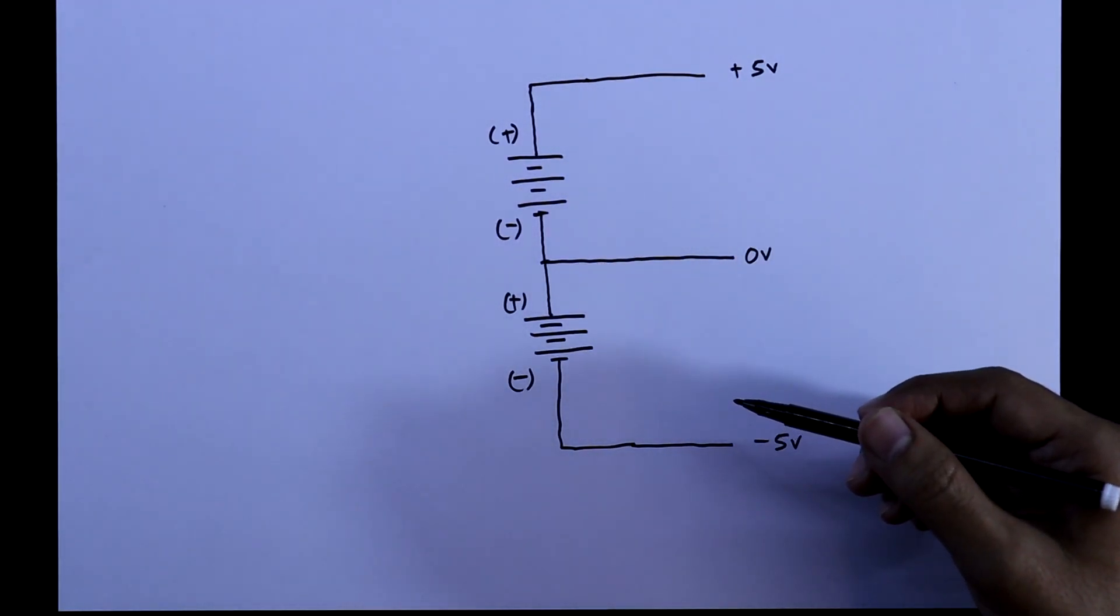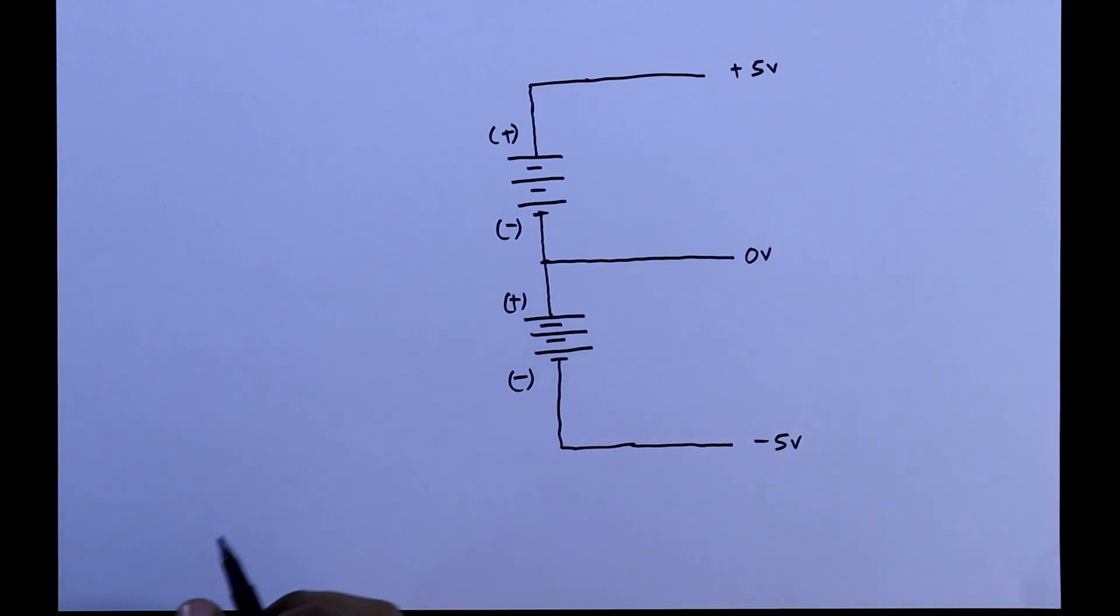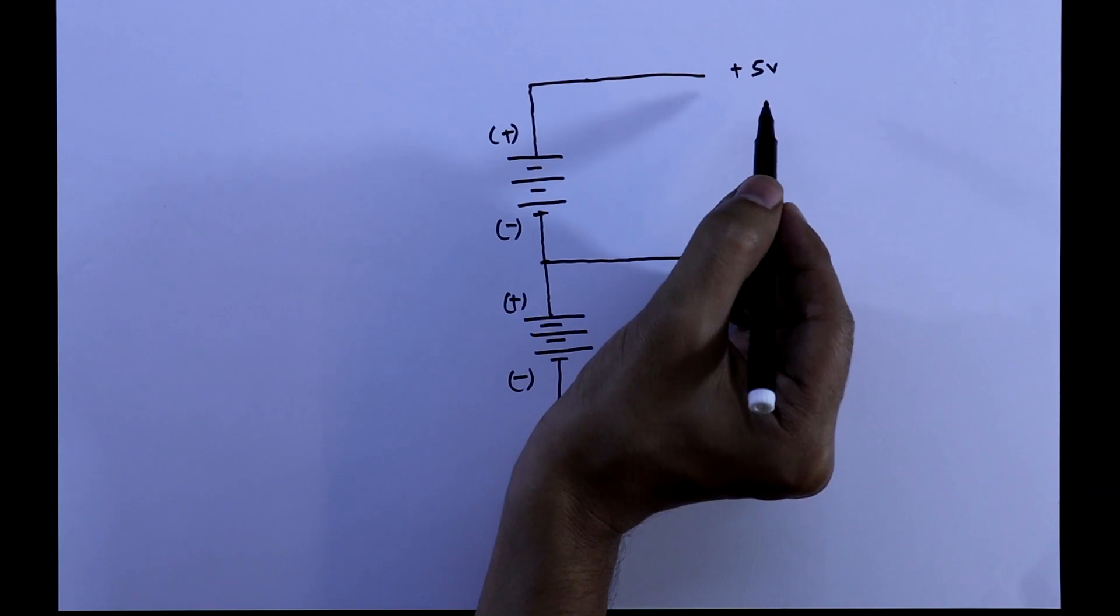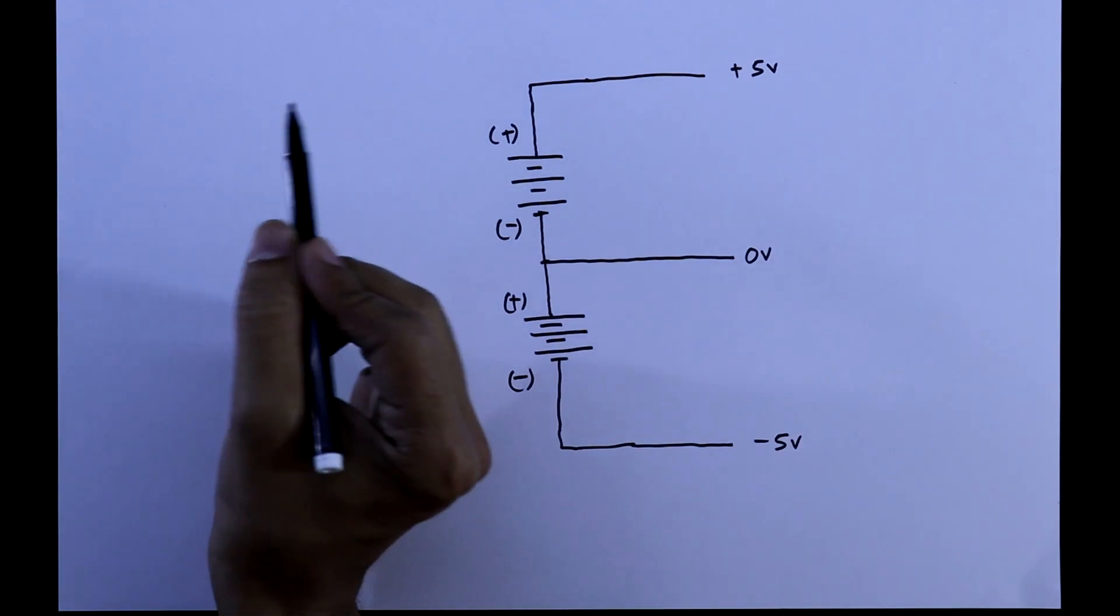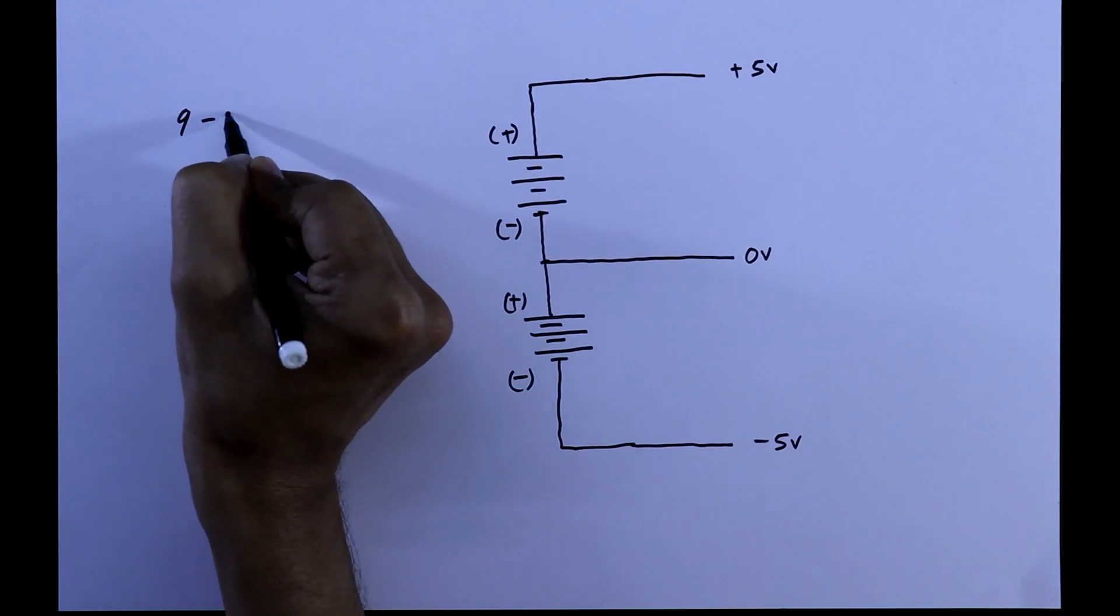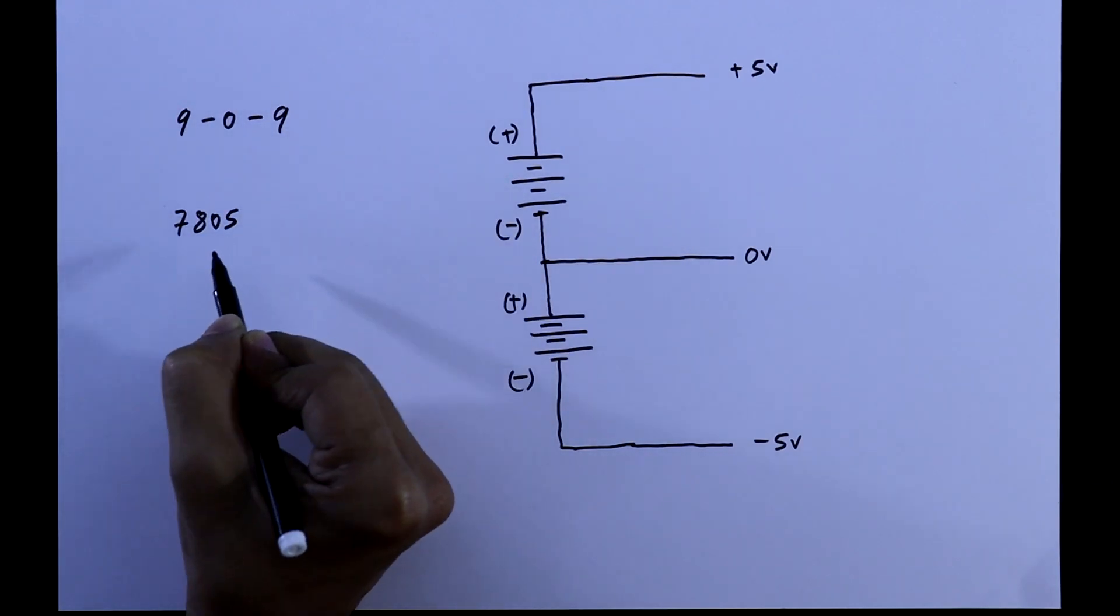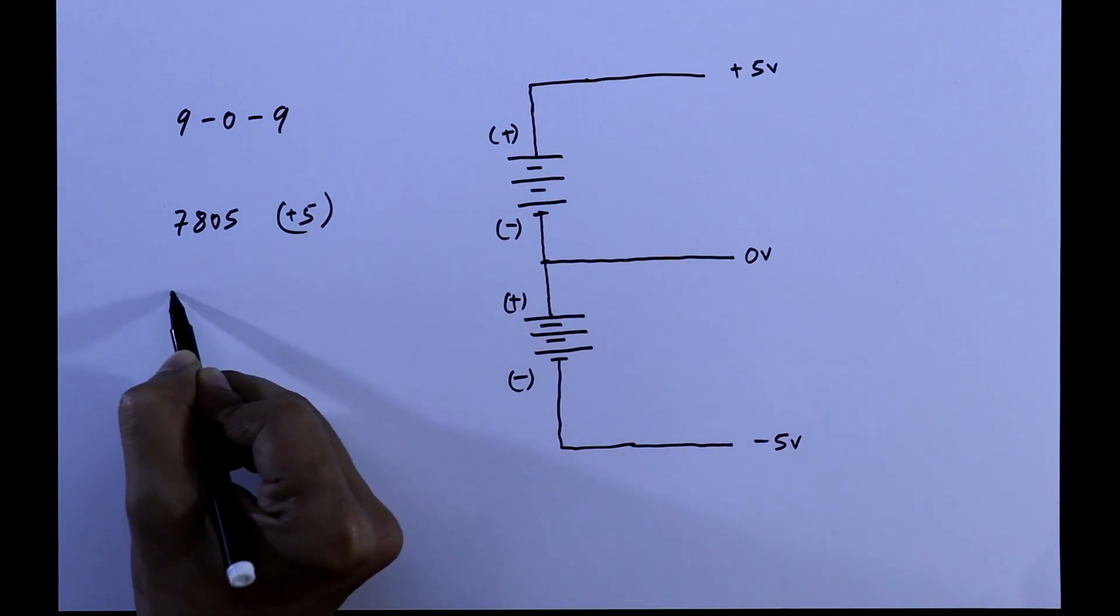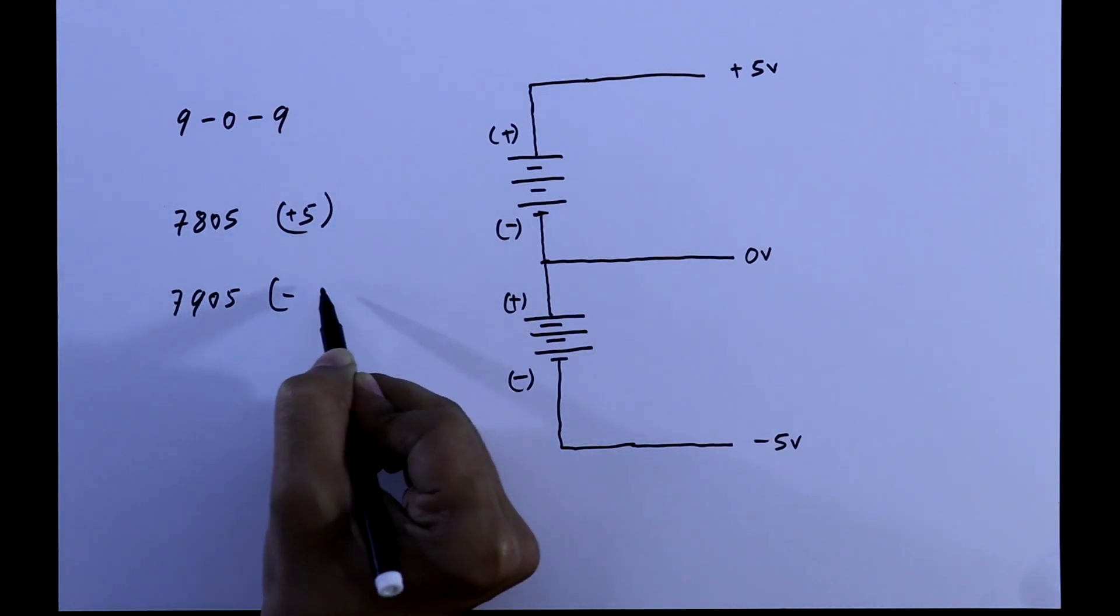Instead of this, we are going to use a transformer and 7805 and 7905 voltage regulator ICs. As our output should be 5 volt, we have to take more than 5 volt transformer. So I am using a 9-0-9 transformer, 7805 for positive 5 volt, 7905 for negative 5 volt.